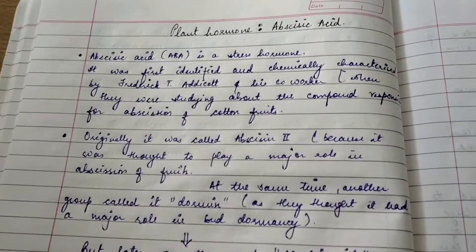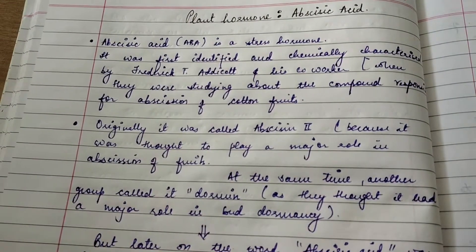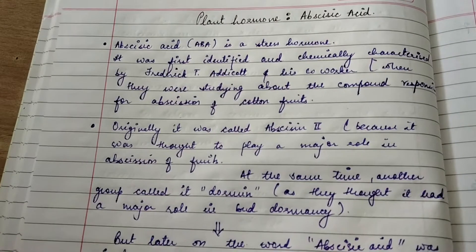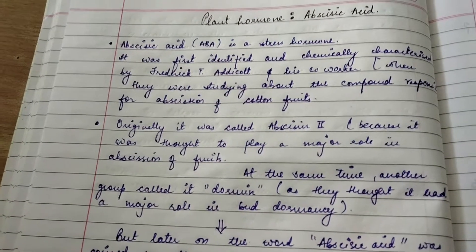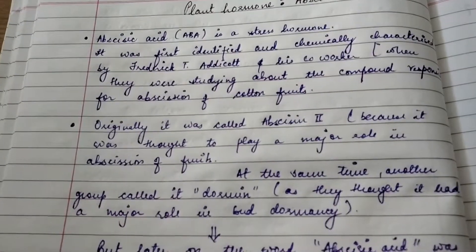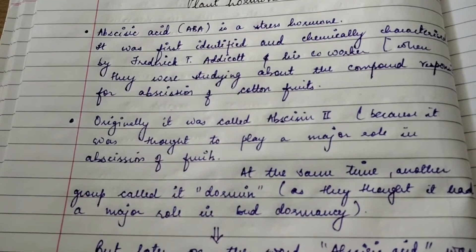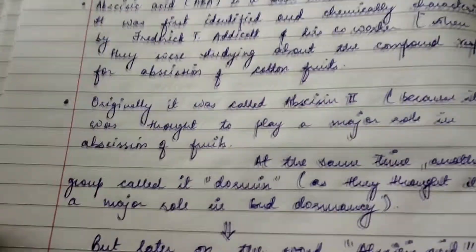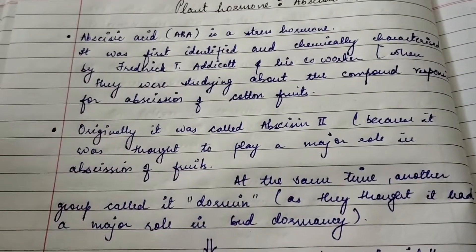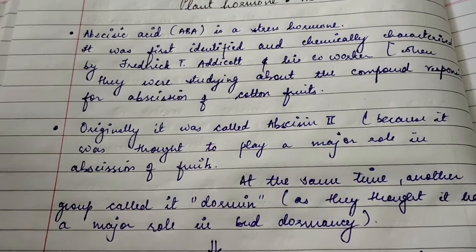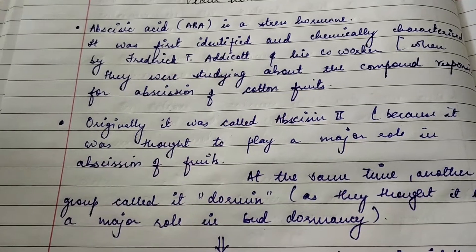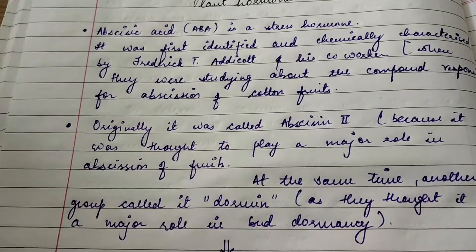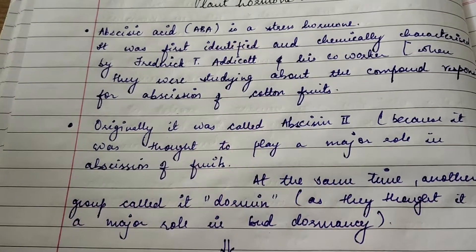Abscisic acid was first identified and chemically characterized by Frederick D. Addicott and his co-workers when they were working together about certain compounds which were responsible for the abscission of cotton fruits. Abscission is the basic term used for the natural detachment of parts of a plant, which are typically dead leaves or ripe fruits. When the fruit falls off a tree, that is abscission, and they were finding out the compounds responsible for abscission when they found abscisic acid.